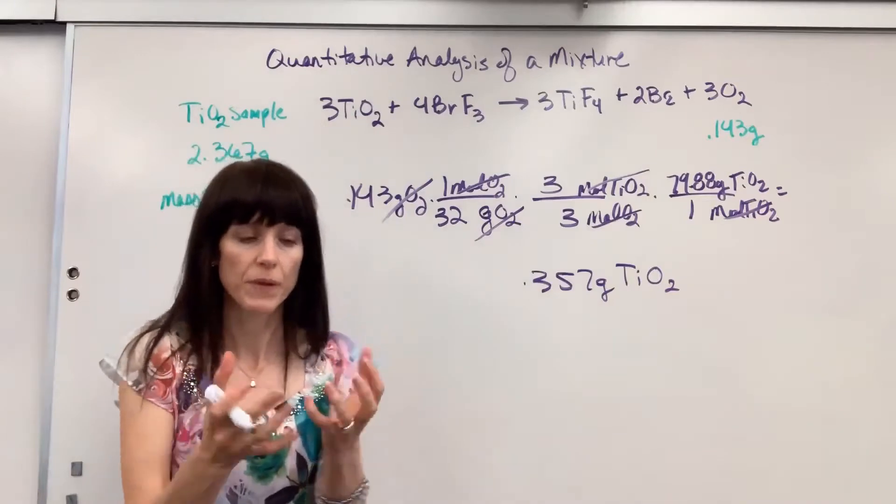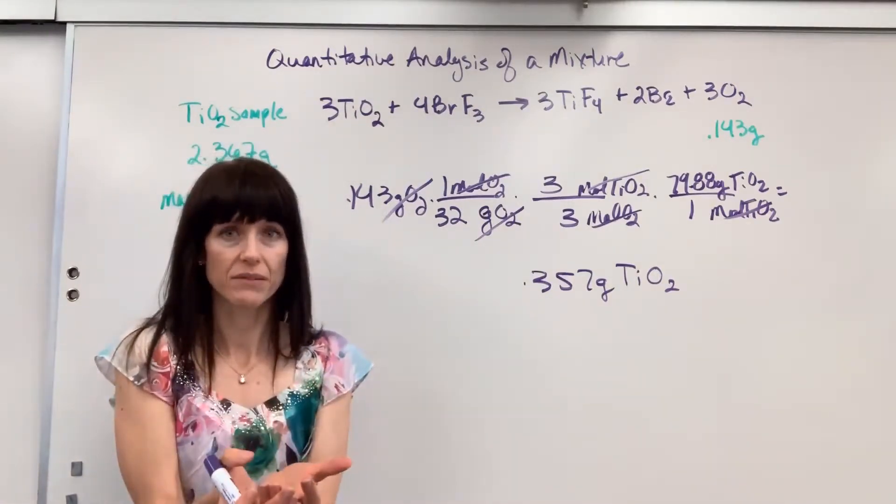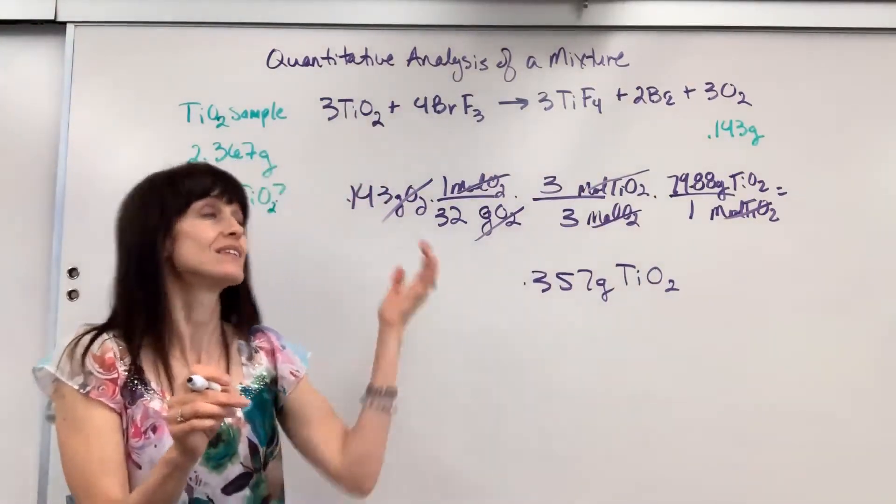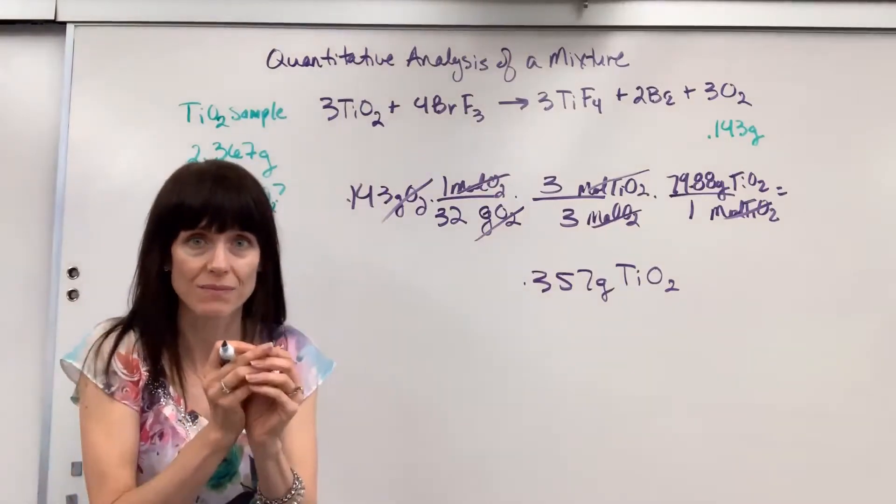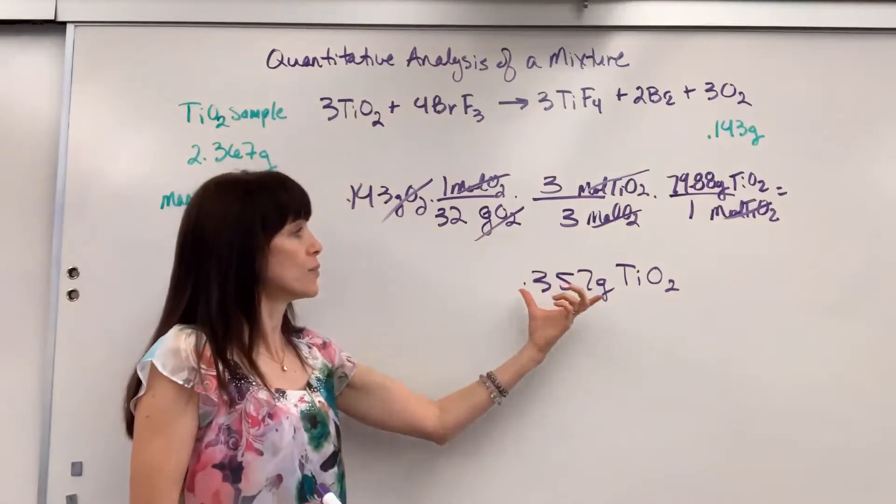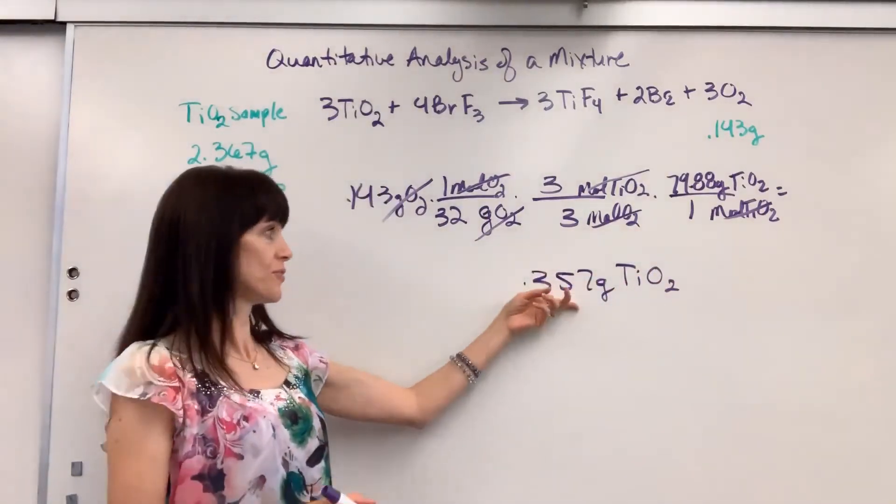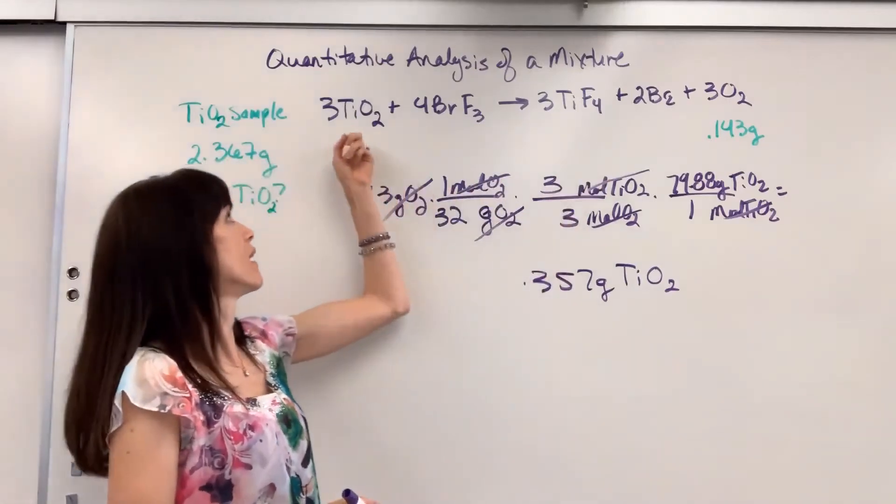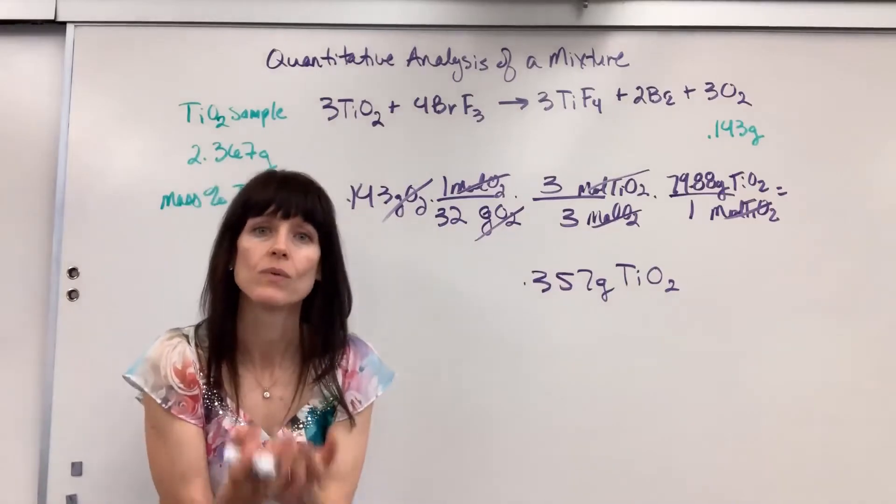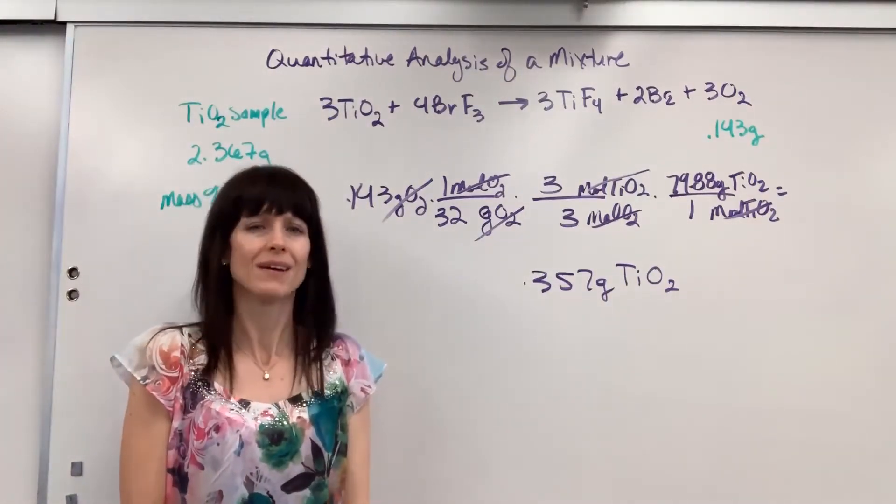Okay. So picture this again. You have some sample. We know that there's some titanium four oxide inside of it. We add to this sample, the bromine trifluoride and just the titanium four oxide reacts, produces this oxygen. You get that amount. And by doing this stoichiometry, going backwards, if you will, figure it out that that oxygen all from the titanium oxide, it tells us that inside the sample was 0.357 grams of the titanium four oxide. That's pretty cool.